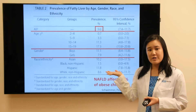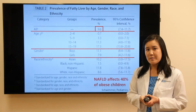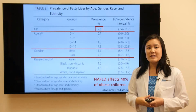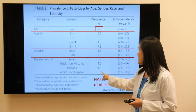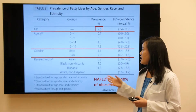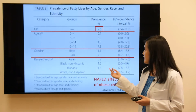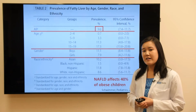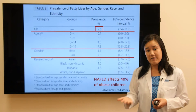There's also a gender predominance. Boys are more likely to have fatty liver compared to girls. Looking at different ethnic groups, Asians and Hispanics have increased rates of fatty liver compared to Caucasians and African-Americans. Interestingly, African-Americans have one of the lowest prevalences of fatty liver, likely due to a protective genetic effect.